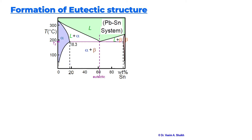Before moving on further, let us see what is so peculiar about the alpha and beta phases. We have to remember that the alpha phase is rich in lead — lead is more in the alpha phase. Similarly, the beta phase is rich in tin. Here you can see the weight percent of tin, and almost around 98–99 percent tin is present in the beta phase.